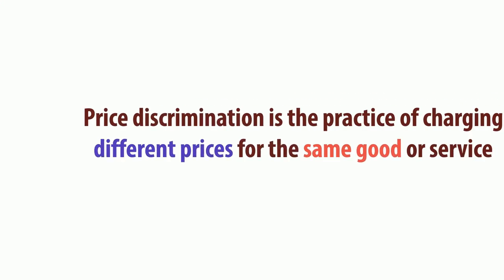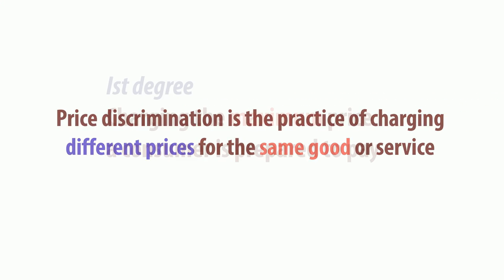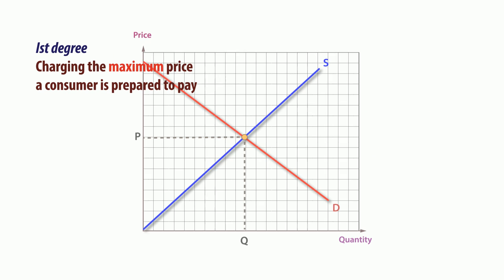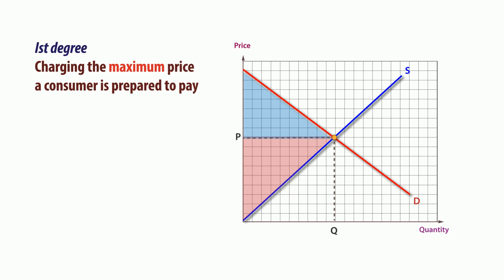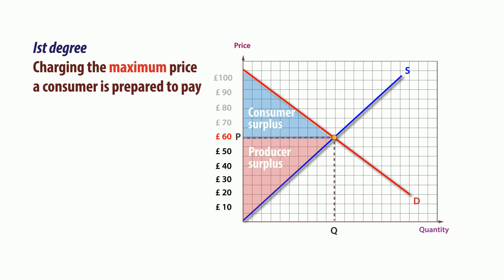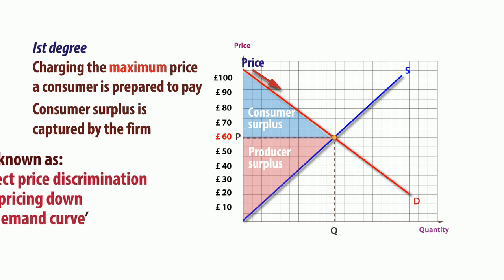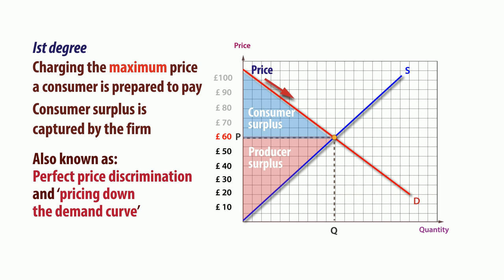There are three main types of price discrimination. First-degree price discrimination exists when a firm charges a different price for every unit purchased. By charging the maximum possible price for each unit, it can capture all the consumer surplus available. This is also known as perfect price discrimination.